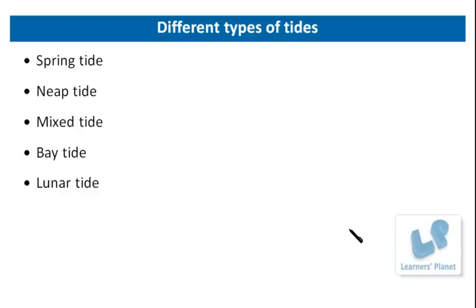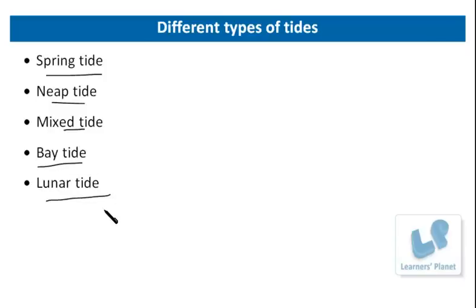There are different types of tides. When the Sun and Moon are aligned, there are exceptionally strong gravitational forces causing very high and very low tides — these are called spring tides, and they have nothing to do with the spring season. When the Sun and Moon are not aligned, the gravitational forces cancel each other out and the tides are not as dramatically high and low — these are called neap tides. There are also mixed tides, bay tides, and lunar tides, which occur on the lunar day.